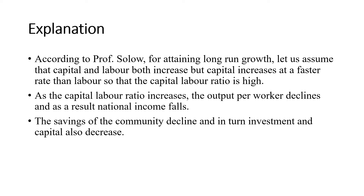As the capital-labor ratio increases, the output per worker declines because more capital is used, and as a result national income falls. Since less labor is engaged, the marginal productivity of labor comes into account. Since the marginal productivity of labor becomes less, wages become less, and as a result the total income of the economy will be less — meaning national income falls.